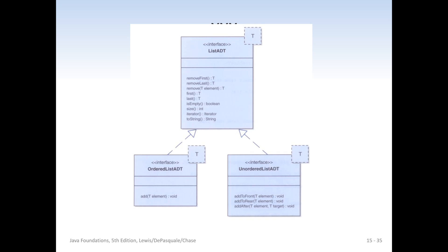Here is our list ADT. We actually have several. We have our base list ADT, which includes remove first, remove last, last, is empty, size, and iterator. Inheriting from that base interface, we have the ordered list interface and the unordered list ADT. They have different methods depending on whether we plan to have an ordered list or an unordered list. So there are three of these: the base, the ordered list, and the unordered list.